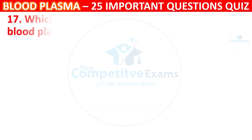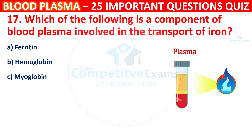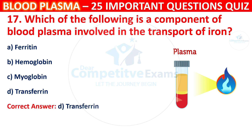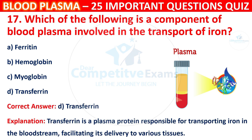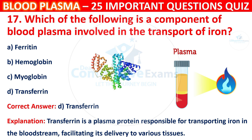Question 17: Which of the following is the component of blood plasma involved in the transport of iron? Your options are Ferritin, Hemoglobin, Myoglobin, or Transferrin. The correct answer is D, i.e. Transferrin. Transferrin is a plasma protein responsible for transporting iron in the bloodstream, facilitating its delivery to various tissues.